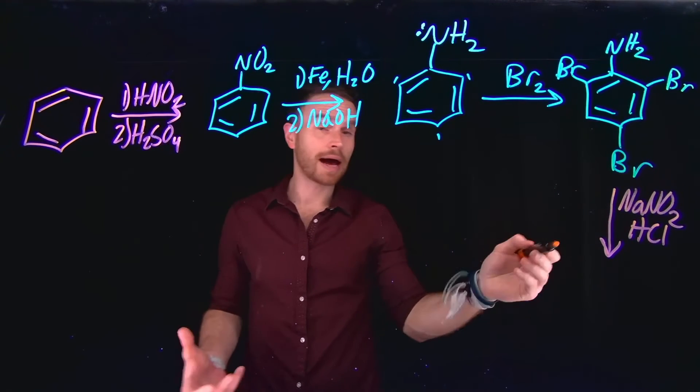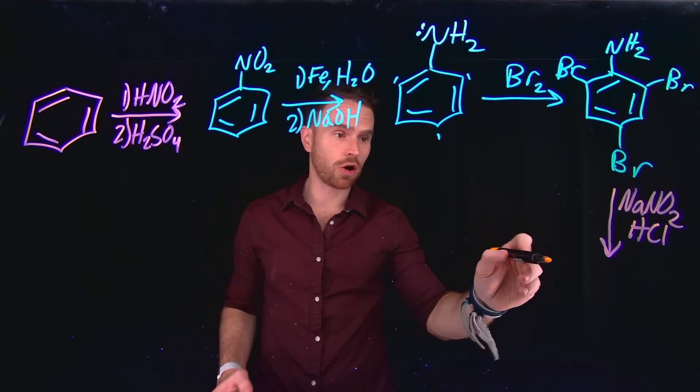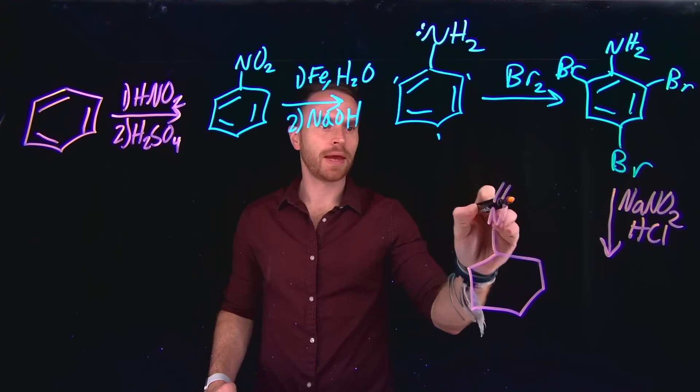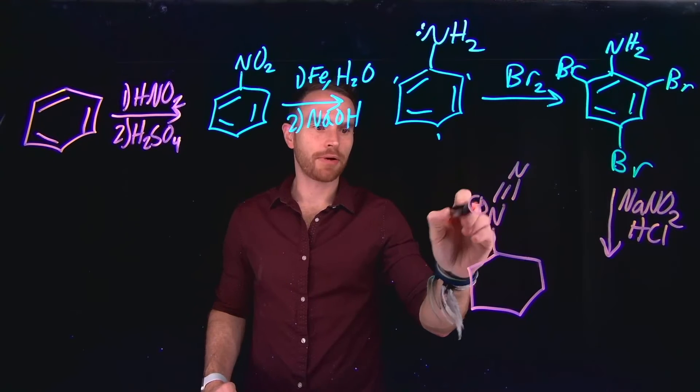for example, will allow us to generate that diazonium salt. So once I have generated my diazonium salt in place of that primary amine, I'm still left with my three bromine substituents.